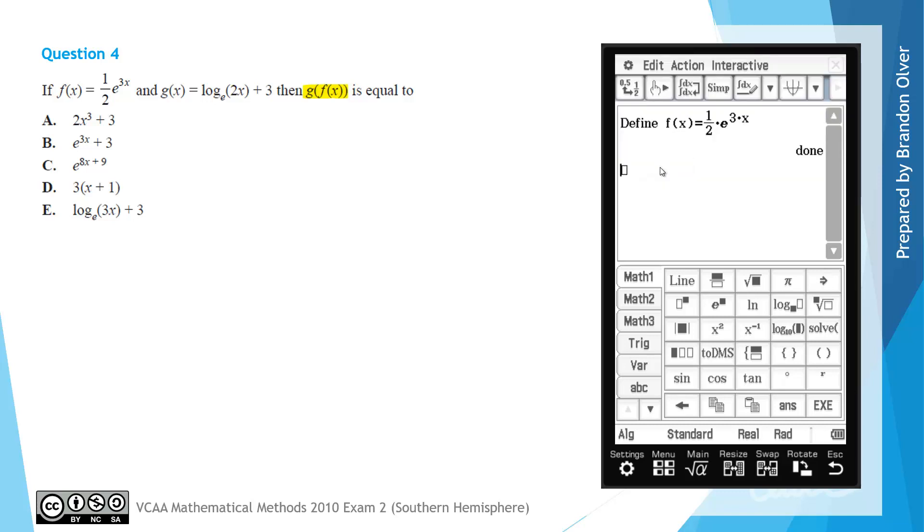And then next, we want to type in log e of 2x. So on the keyboard, we can go ln for log natural or log base e. And then we need 2x in there. And then we close off the bracket, and we still need a plus 3. And that's the rule for g of x.